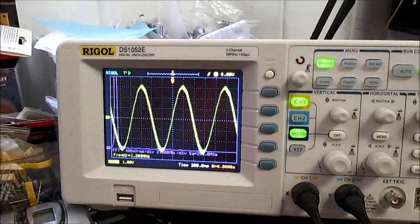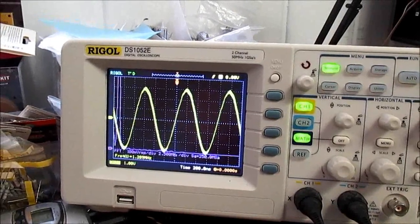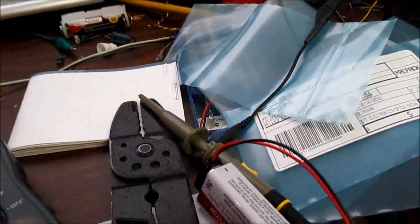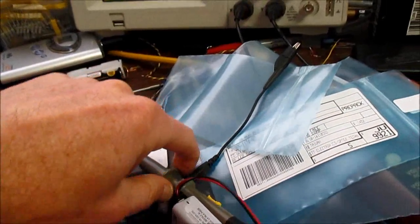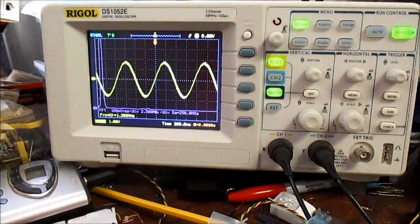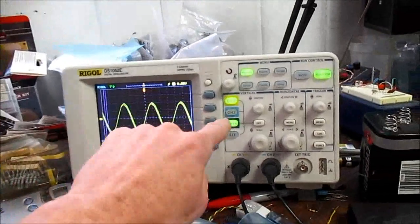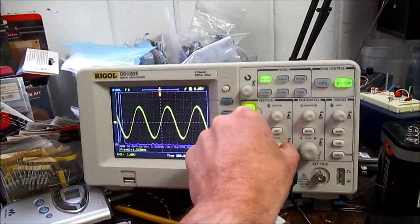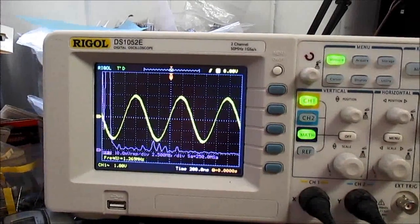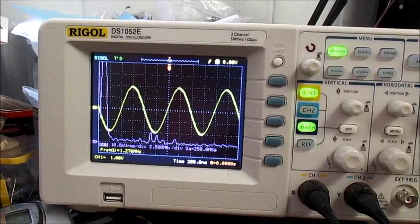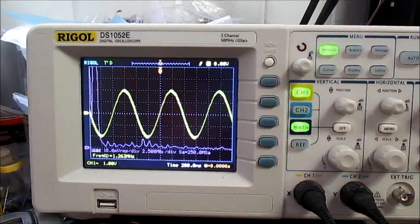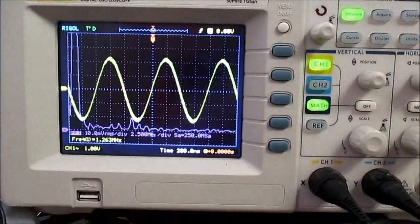You might say why is the waveform jumping around? Well, the scope is picking up other noise because it's just hanging open here. But on the spectrum analyzer mode, if I turn that up a little bit, that's maxed out. There might be a little bit of noise there, but yeah it's very, very small. We're looking at a very low level of noise.